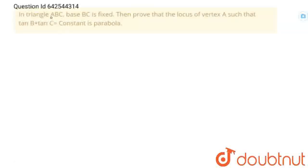Hello students, question is in triangle ABC, base BC is fixed. Prove that the locus of vertex A such that tan B plus tan C is equal to constant is a parabola. We have to prove. So let's prove this.